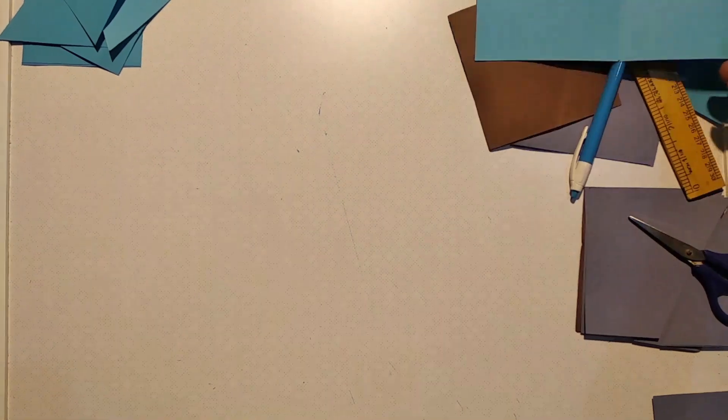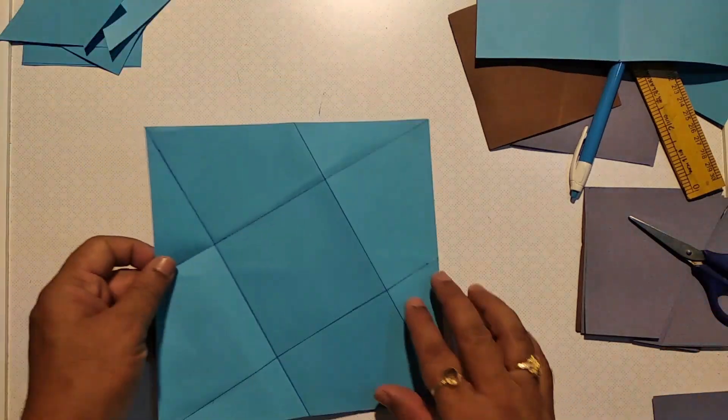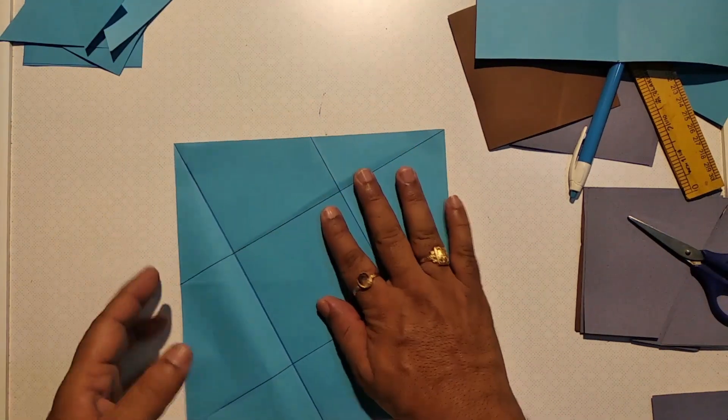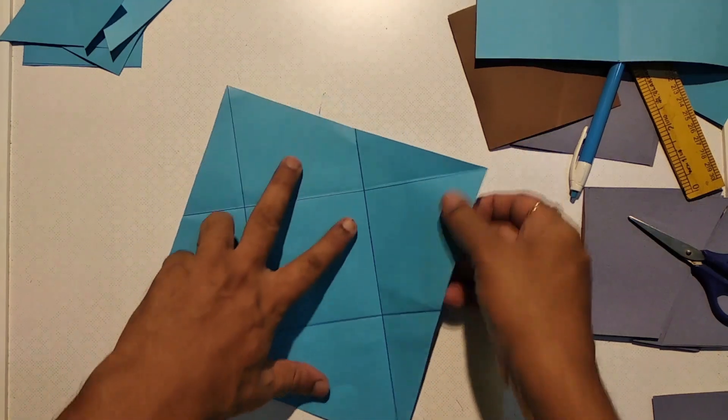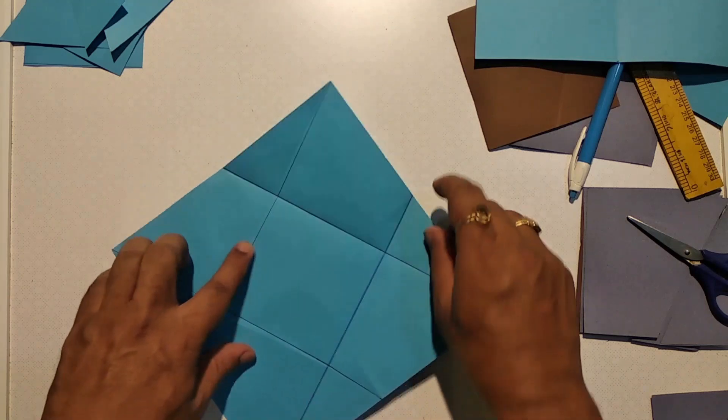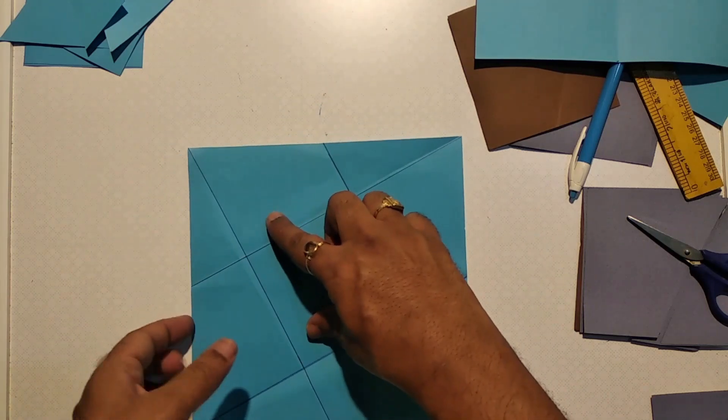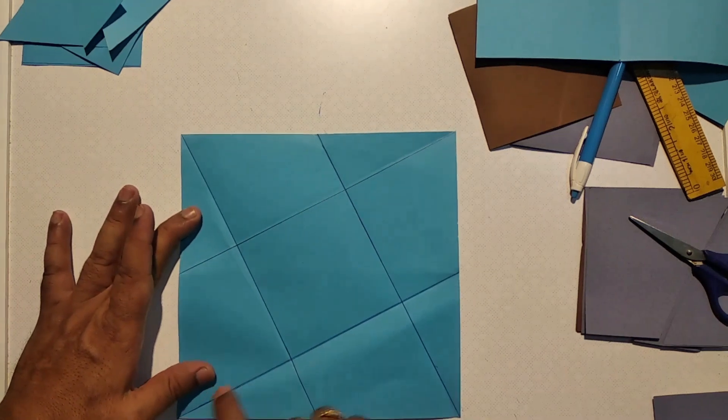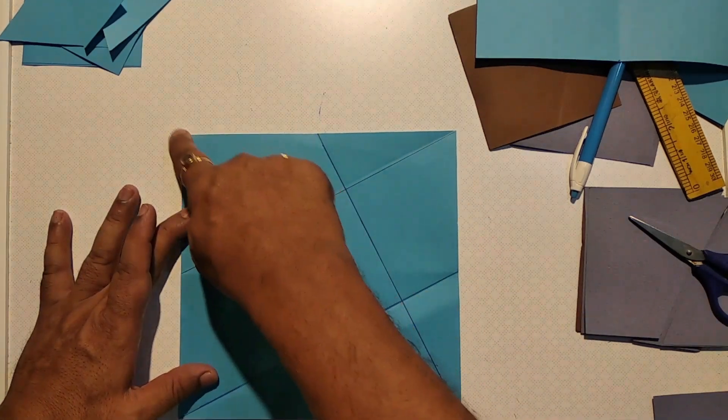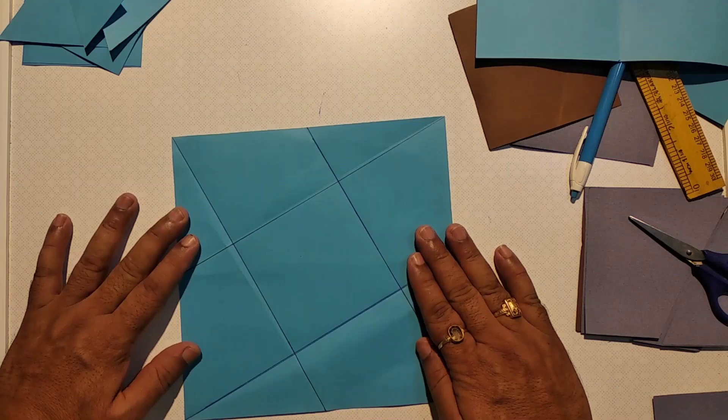And the creases will look like this. I have highlighted the creases. And you can see nine geometrical shapes on that. And we have to cut on these creases.